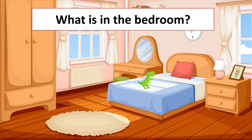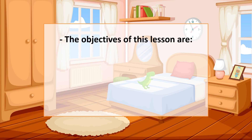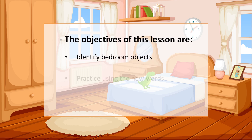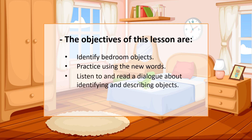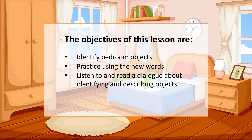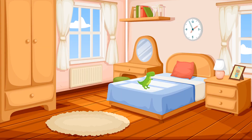What is in the bedroom? The objectives of this lesson are: identify bedroom objects, practice using the new words, listen to and read a dialogue about identifying and describing objects, and select a picture that matches the sentence. This is a bedroom. What do we have in this bedroom?